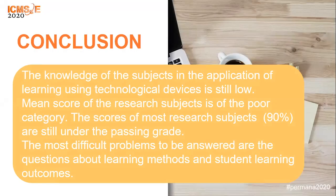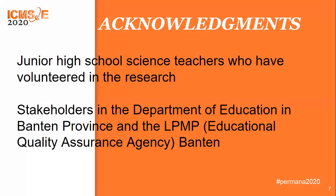Conclusion. The knowledge of the subjects in the application of learning using technological devices is still low. The mean score of the research subjects falls in the poor category, and 90% of research subjects are still under the passing grade. The most difficult problems to answer are questions about learning methods and student learning outcomes. We want to thank all junior high school science teachers who volunteered in the research, and acknowledgements to stakeholders in the Department of Education in Banten Province and LPMP Banten.